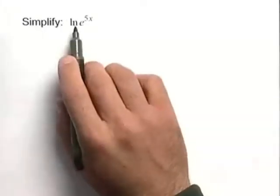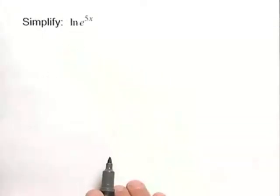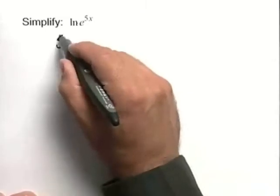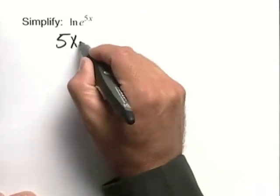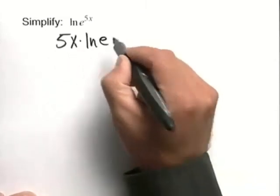Let's simplify an expression using the natural logarithm and the exponential e. We have the natural log of e to the 5x power. We can use our log properties to write this as 5x times the natural log of e.